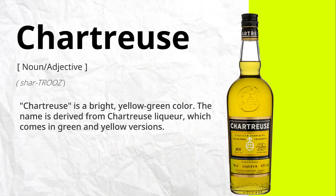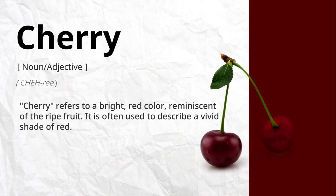Chartreuse is a bright, yellow-green color. The name is derived from chartreuse liqueur, which comes in green and yellow versions. Cherry refers to a bright red color, reminiscent of the ripe fruit. It is often used to describe a vivid shade of red.